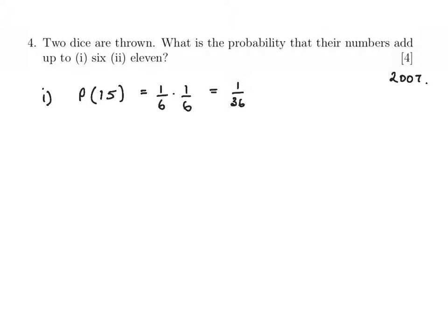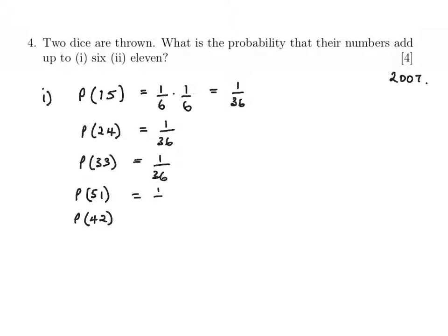We just have to think about the number of possible combinations. We could have two and four — that's also one over thirty-six. We could have three on the first dice and three on the second — one over thirty-six. But we could also reverse the order: five on the first and one on the second, and four and two. That's one over thirty-six each. So the probability of getting a total of six with two rolls of the dice is five out of thirty-six.